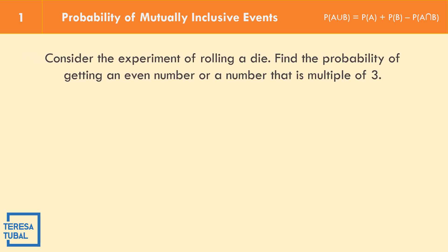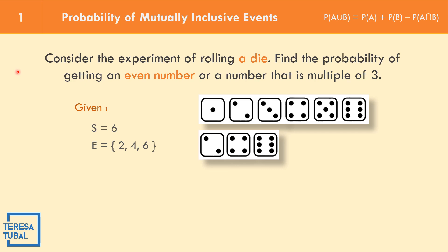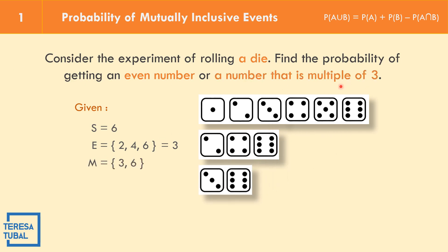Example number 1: Consider the experiment of rolling a die. Find the probability of getting an even number or a number that is a multiple of 3. The sample space equals 6, because the numbers on a die are 1, 2, 3, 4, 5, and 6. The even numbers on a die are 2, 4, 6 — so we have 3 elements. The multiples of 3, let us represent with M, are 3 and 6 — so we have 2 elements.